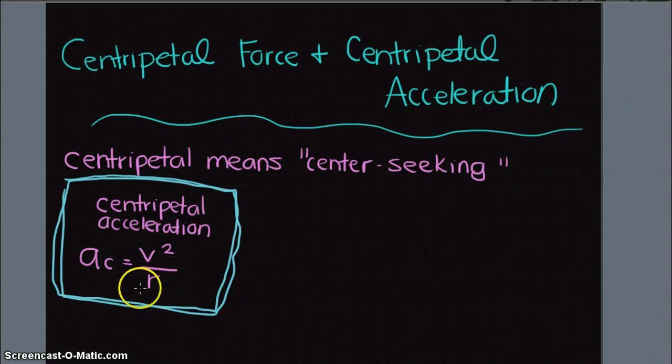Now if we have an object moving in a circle, let's say in this direction, we know that the velocity is constantly changing.